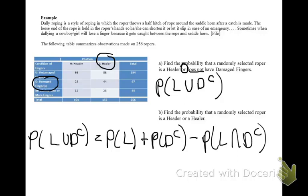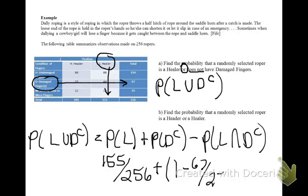The probability that a person is a healer is 155 out of 256. The probability that a person does not have damaged fingers is the same as 1 minus the probability that they do. So 1 minus the probability that someone does have damaged fingers. That's 67 out of 256.